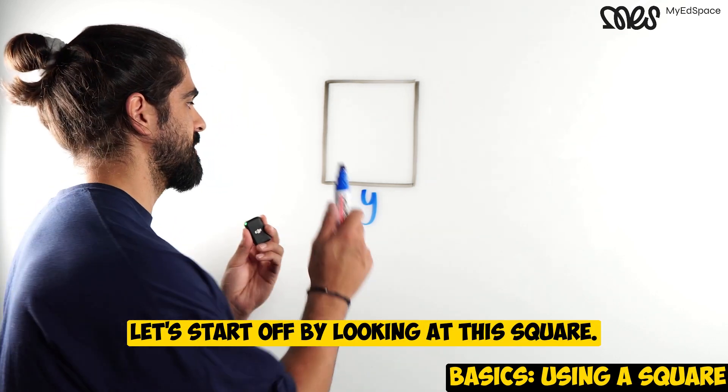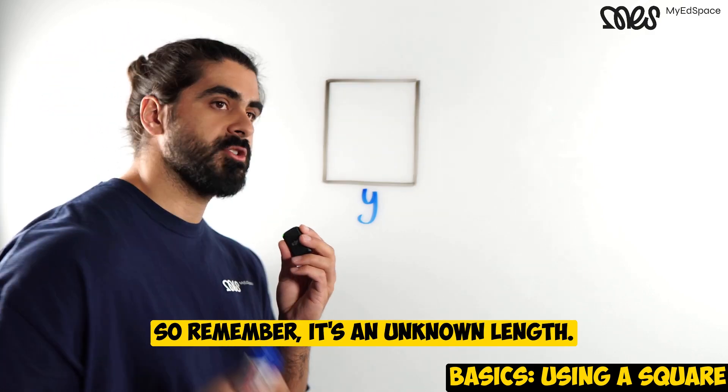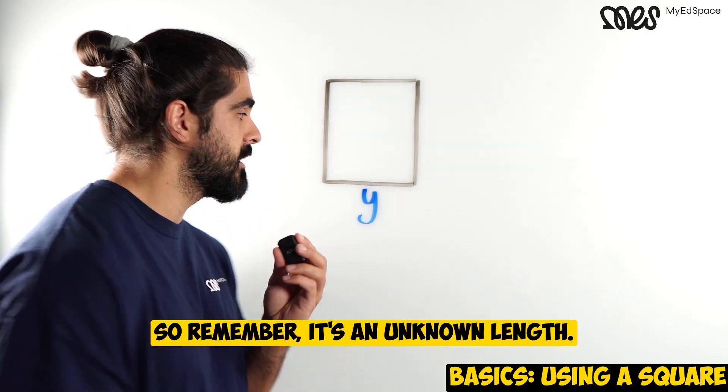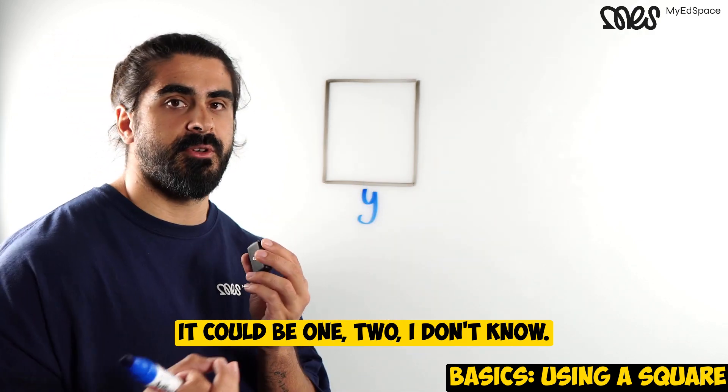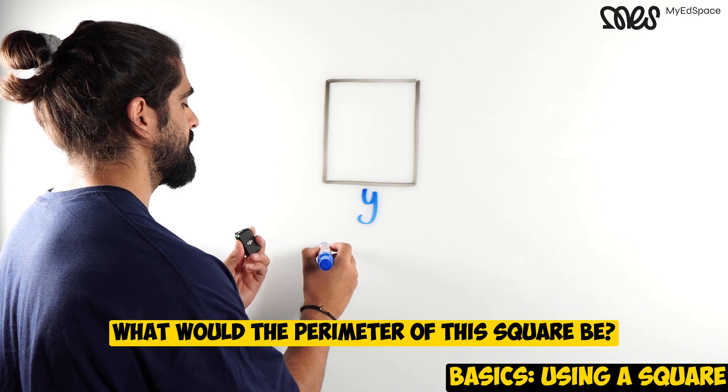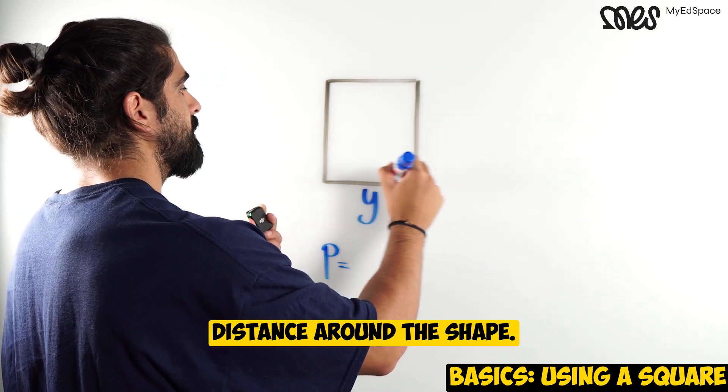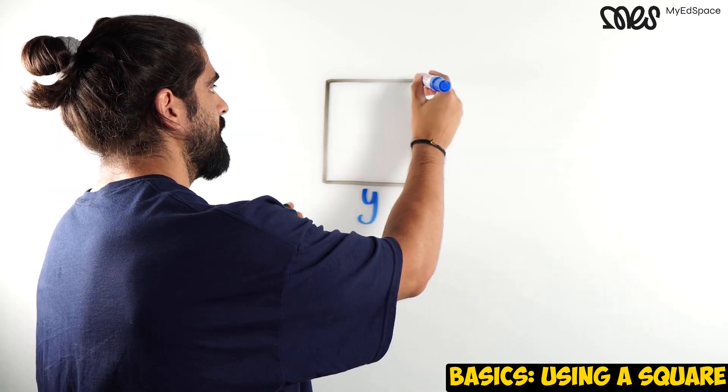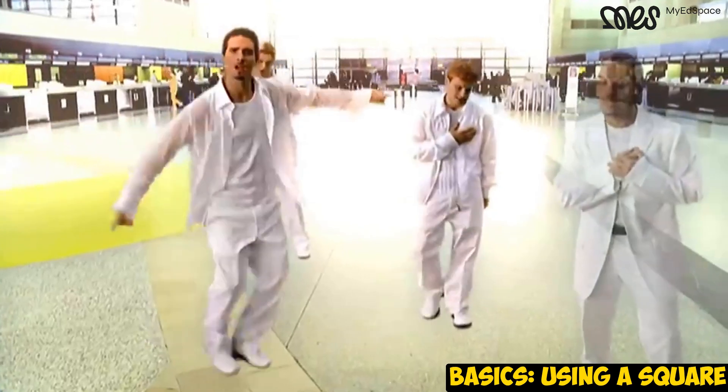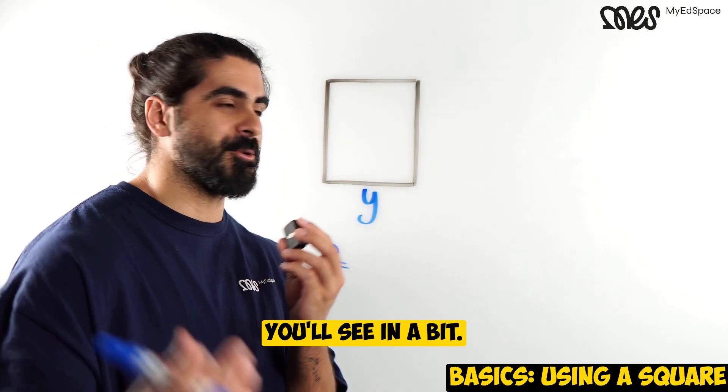Let's start off by looking at this square. This square has side length y. So remember, it's an unknown length. It could be one, two, I don't know, but we're going to generalize some situations. What would the perimeter of this square be? Now, perimeter means the distance around the shape. So, y, y, y, y. You might be asking, why am I even asking this question? You'll see in a bit.